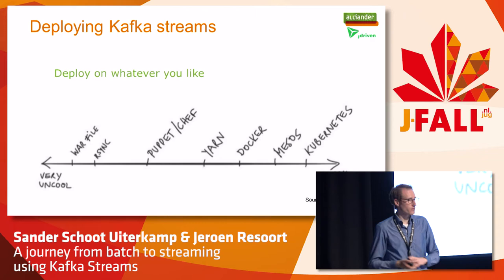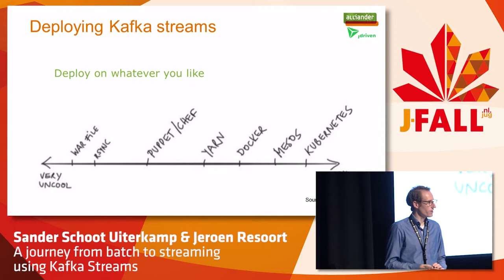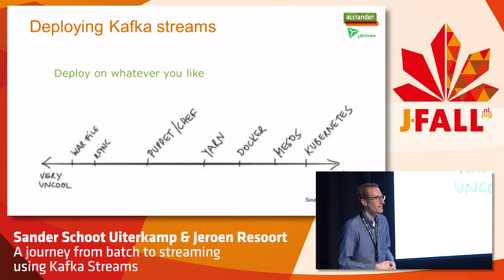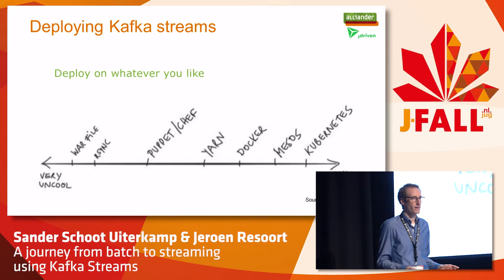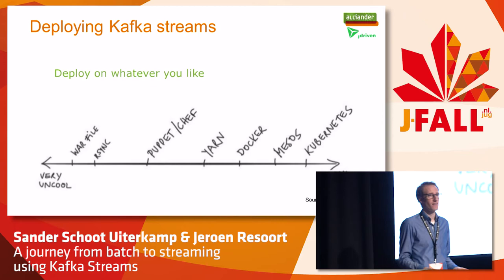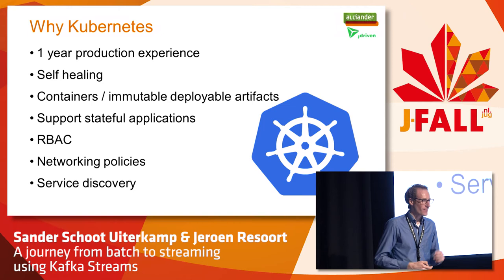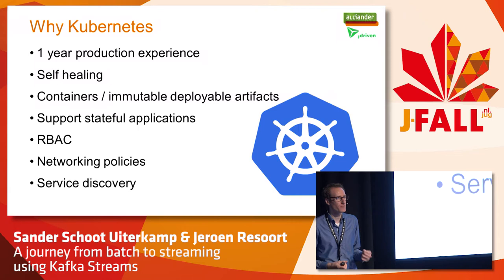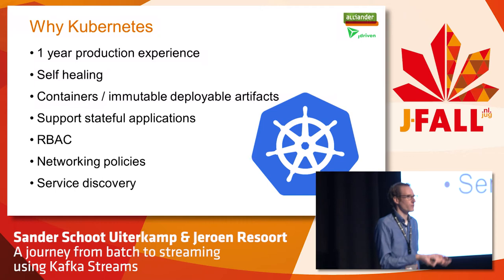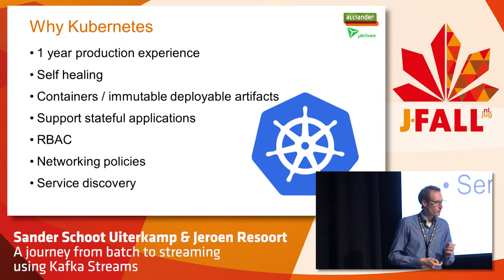We deploy Kafka Streams on Kubernetes. There are also many other ways to deploy it — it's basically a jar. Kubernetes is very cool. Are there people here already using Kubernetes? For us, we are very happy using Kubernetes. It has self-healing capabilities as Jeroen mentioned. We've been using it in production for a year already. It's very dynamic — if you want extra resources, they're added automatically. For Kafka and Kafka Connect, persistence is very important, so I'll talk about the persistence layer in Kubernetes and how it's automated.